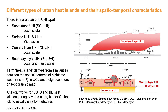The subsurface urban heat island is the difference between temperature patterns in the ground underneath the city and those in the surrounding rural ground. It is a local scale phenomenon. The surface urban heat island is the temperature difference at the interface of the atmosphere with the materials of the city and the ground-air interface of the rural area. Ideally, the urban interface includes all surface facets making up the so-called complete surface. It is a micro scale phenomenon.